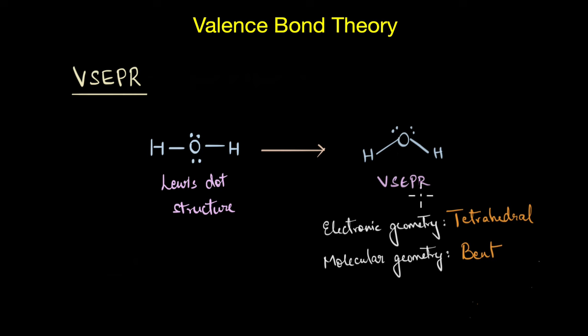So this is how VSEPR theory helps us predict the geometry of different molecules. But unfortunately, the theory did have several limitations—like it does not take into account the size of the atoms, the fact that larger atoms can push the smaller atoms significantly and affect the shape of the molecule. It also does not consider the effect of multiple bonds; the theory simply assumes multiple bonds to behave like single bonds. So clearly, this was not a foolproof theory. To overcome these limitations, let's look at another important approach towards bonding called the Valence Bond theory.